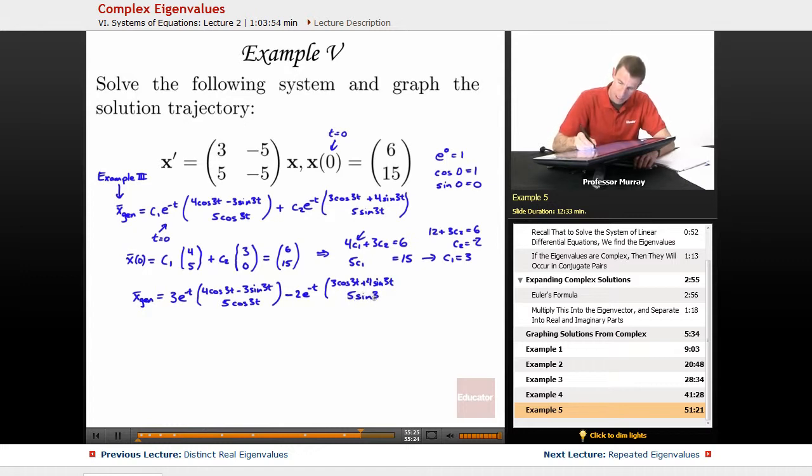And I think I can combine those together. So I'll have an e to the negative t everywhere, and if I look in the top, I see I've got 3 times 4 cosine, so that's 12 cosine. Over here I've got minus 6 cosine, so that leaves me with a net of 6 cosine 3t.